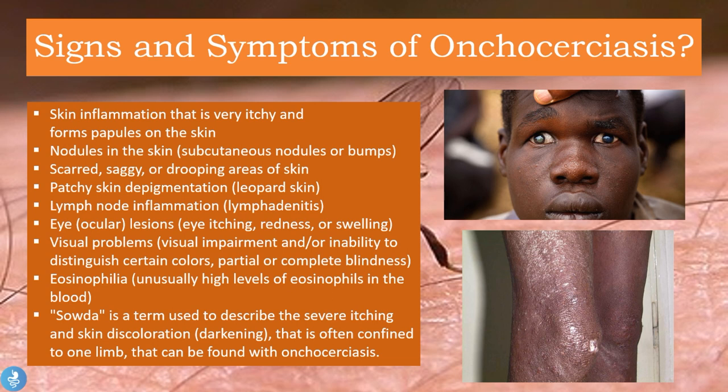Patients will also have eosinophilia — high levels of eosinophils in the blood — which is the body's general response to a parasitic infection. High levels of these white blood cells will try to fight the infection. Something specific to this disease is something called sowda, a term used to describe severe itching and skin darkening often confined to one limb, and it can be found in patients with Onchocerciasis.